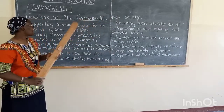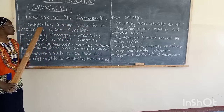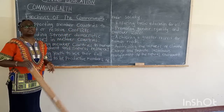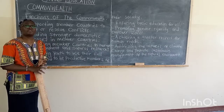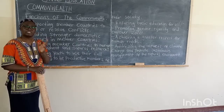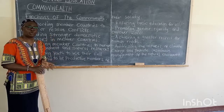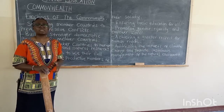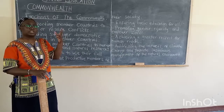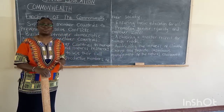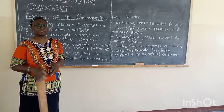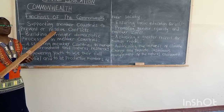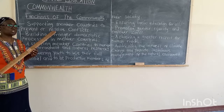Now let's look at the functions of the Commonwealth. First, supporting member countries to prevent or resolve conflicts. When they hear that a member country is having conflicts — maybe a civil war or an international war — they will come in to help. If there is need, they can send a representative from the Commonwealth to negotiate or have a peace talk between the two countries that are fighting. So they want peace in all the countries.